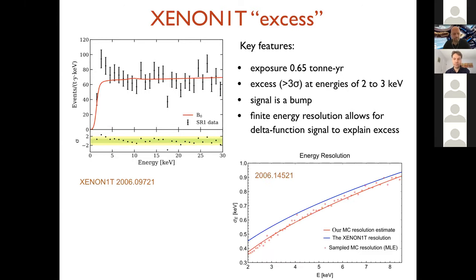The signal is a bump, so you see that the first bin is low and efficiency is falling here, but this is clearly, the red line is the background model. So this signal is a bump. That's what you have to produce if you want to explain this with new physics. And the finite energy resolution allows even for a delta function signal to explain the excess because it's going to be smeared.